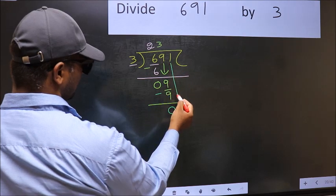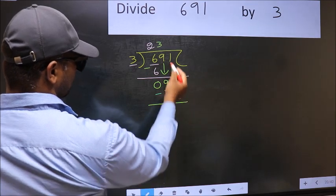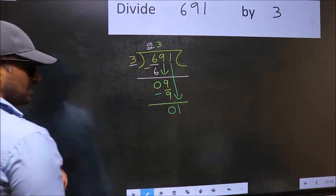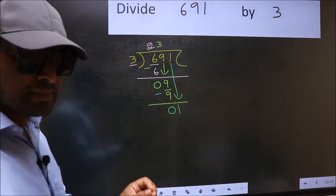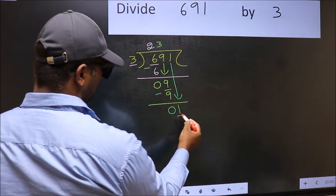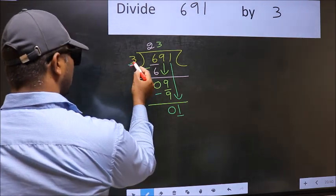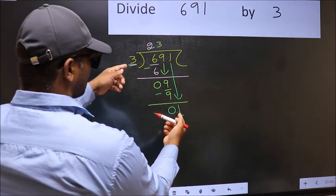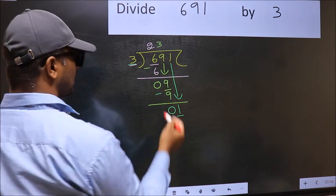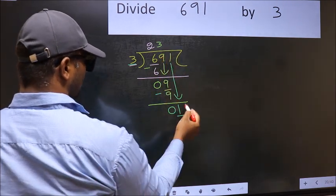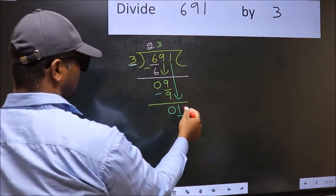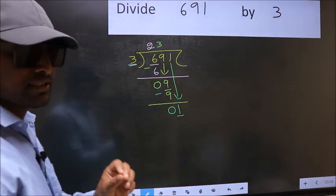After this, bring down the beside number. So 1 down. After this step, the mistake happens. And the mistake is this. Here we have 1, and here 3. 1 is smaller than 3. So what many do is, they directly put a dot and take 0 here. Dot and take 0 here, which is wrong.